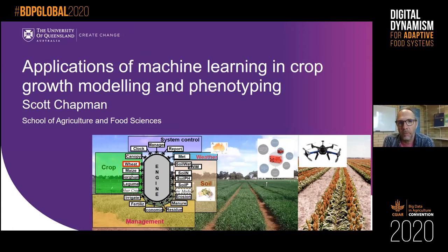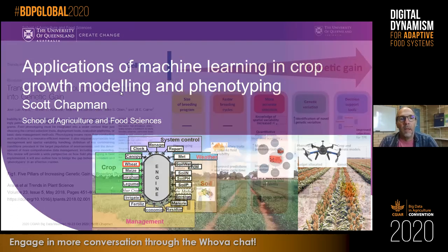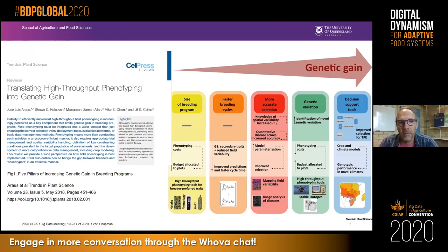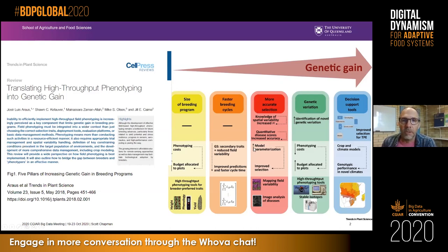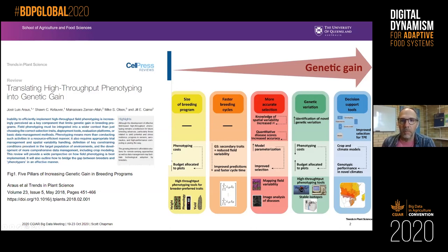What I wanted to do was go through some brief applications of machine learning related to crop growth modeling and more specifically phenotyping. This is a quick summary of some applications of these tools to look at genetic gain, put together by Jose Luisa Rouse and colleagues from CIMIT, looking at how to translate high-throughput phenotyping into genetic gain, thinking about the steps of improving genetic gain and accelerating the amount of phenotyping we can do.